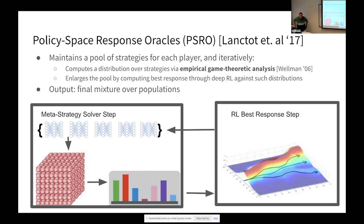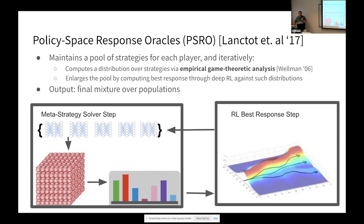Q: Why is there a pool of policies rather than just using the latest policy? A: Because you're essentially building up the support of an equilibrium — each policy is one item in that support. Each oracle is really a best response, so they tend to be very pure, as best responses to a mixture of the previous iterations. You want to think of this as an approximate version of the bigger game, maintaining a set of policies that summarizes its support space.